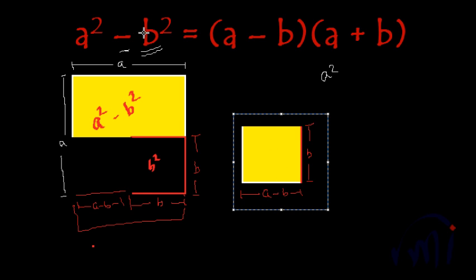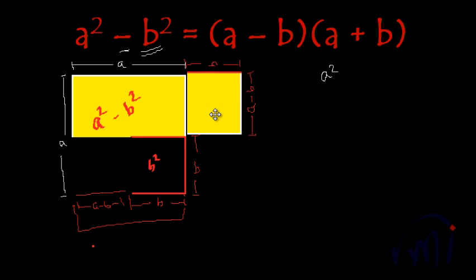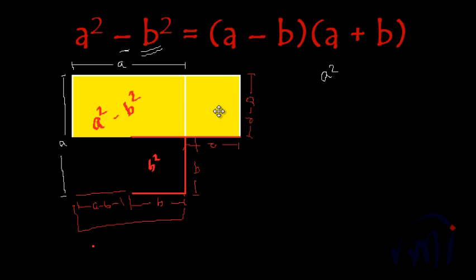Now I am going to join this over here. Before joining, I am going to turn it by 90 degrees. Let me flip it again. So this much was b and this much was originally a minus b. Since this is b, this is also b.